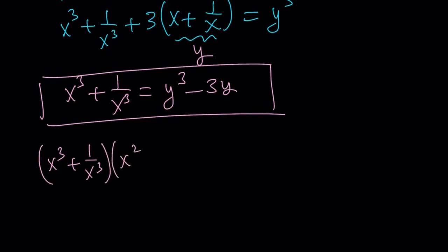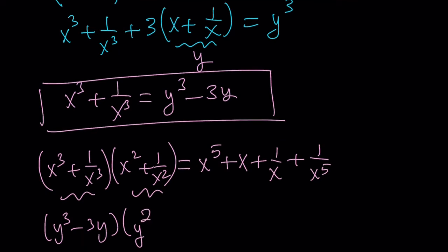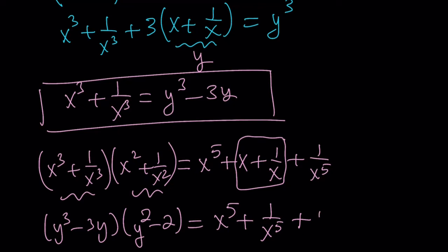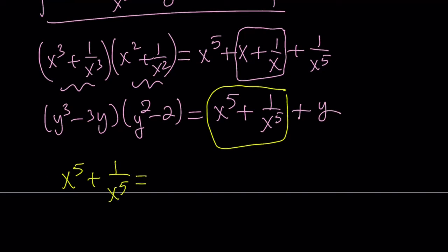Let's take the sum of squares and the sum of cubes and multiply them together, because that's going to give us the 5th powers and some extra terms. If you distribute, you get x to the 5th, plus x, plus 1 over x, plus 1 over x to the 5th. We know the first expression is y cubed minus 3y and the second is y squared minus 2. On the right hand side we have x to the 5th plus 1 over x to the 5th, and that extra piece happens to be y. So we isolate x to the 5th plus 1 over x to the 5th and put the y on one side.